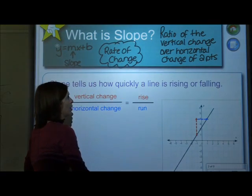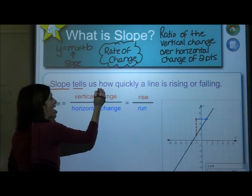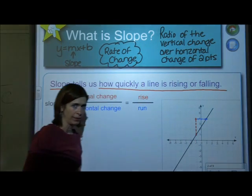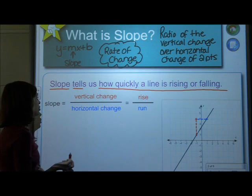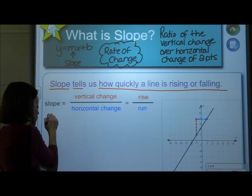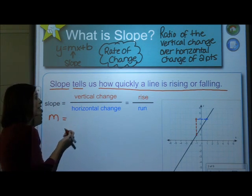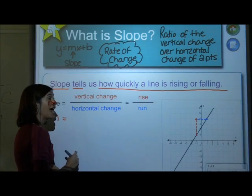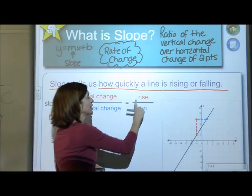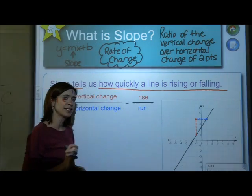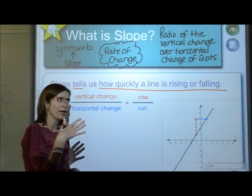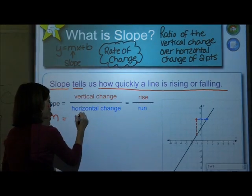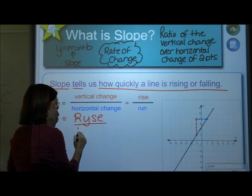That might help us. Slope tells us how quickly a line is rising or falling. And you are going to use for slope the variable m. Like I said, it's the ratio of the vertical change over the horizontal change. And in previous classes, you might have learned that it's the rise over the run. One of the biggest things is kids sometimes forget, does the y go on top? Does the x go on top?